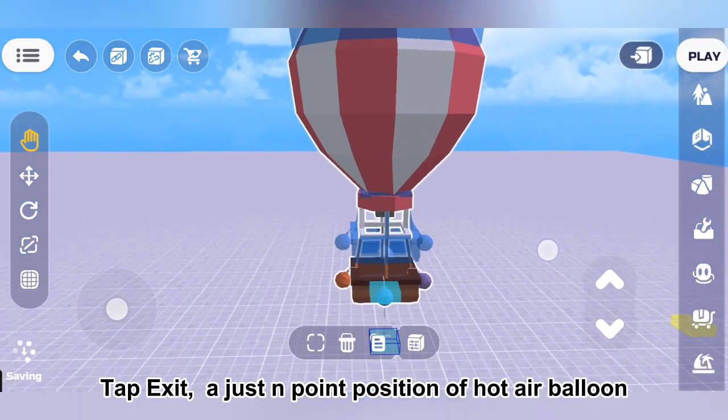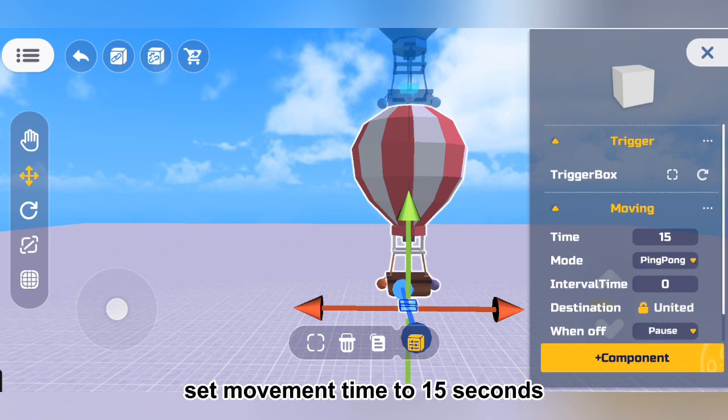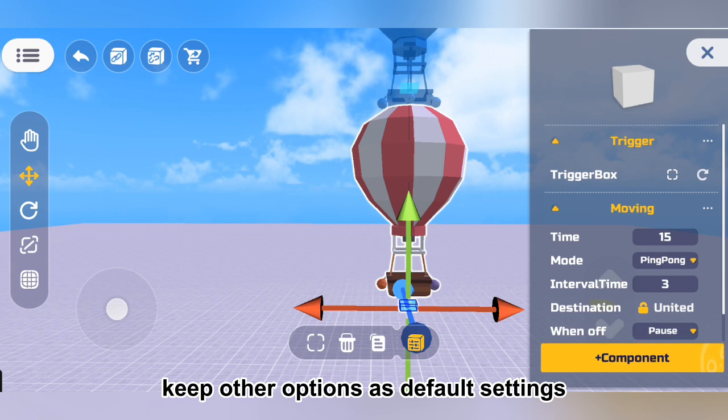Tap exit, adjust endpoint position of hot air balloon. In parameter settings, set movement time to 15 seconds and interval time to 3 seconds. Keep other options as default settings.